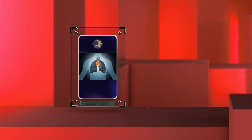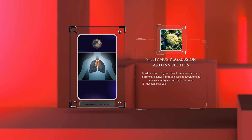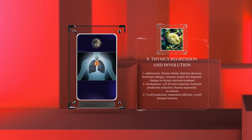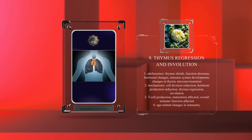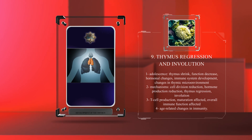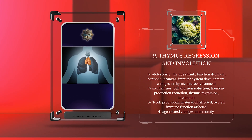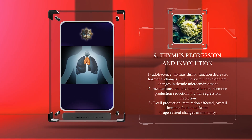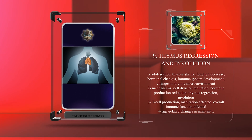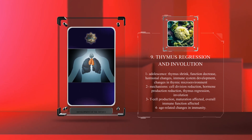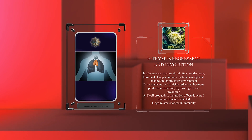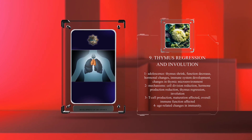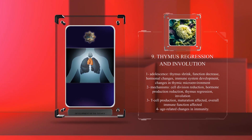In adolescence, the thymus shrinks and its function decreases due to hormonal changes, immune system development, and changes in the thymic microenvironment. The precise mechanisms are unclear, but they involve reduced cell division and hormone production. Thymus regression and involution affect T-cell production and maturation, which can affect overall immune function.